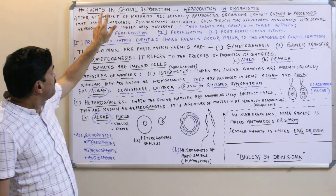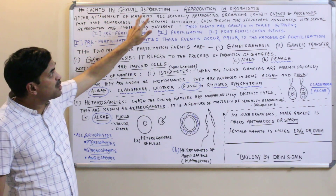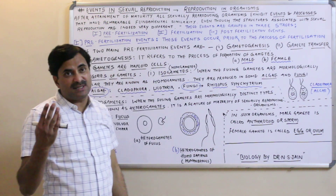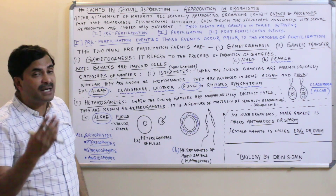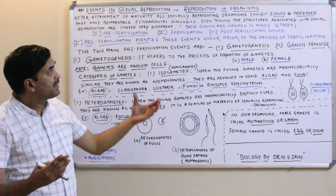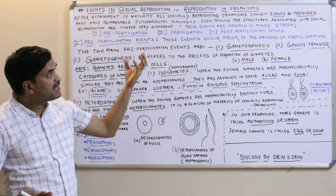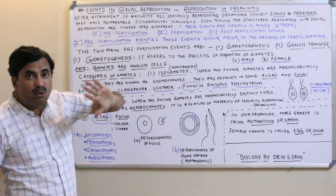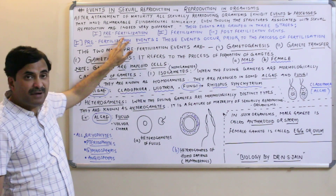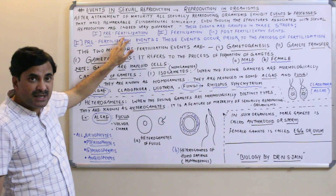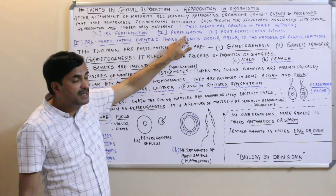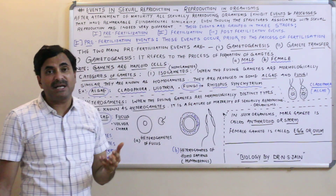If we talk about the events in sexual reproduction, then they are grouped in three stages. If we want to study the events which occur during sexual reproduction, then how many stages? Three stages, and all three stages are very very important. Number one is pre-fertilization events, number two is fertilization events, and number three is post-fertilization events.